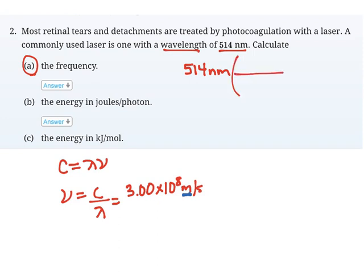Since they give me the original in nanometers, I'm going to convert my wavelength into meters. I can look up the conversion: there's 10 to the 9 nanometers in 1 meter. Nanometers cancels out, and I end up getting 5.14 times 10 to the negative 7 meters.